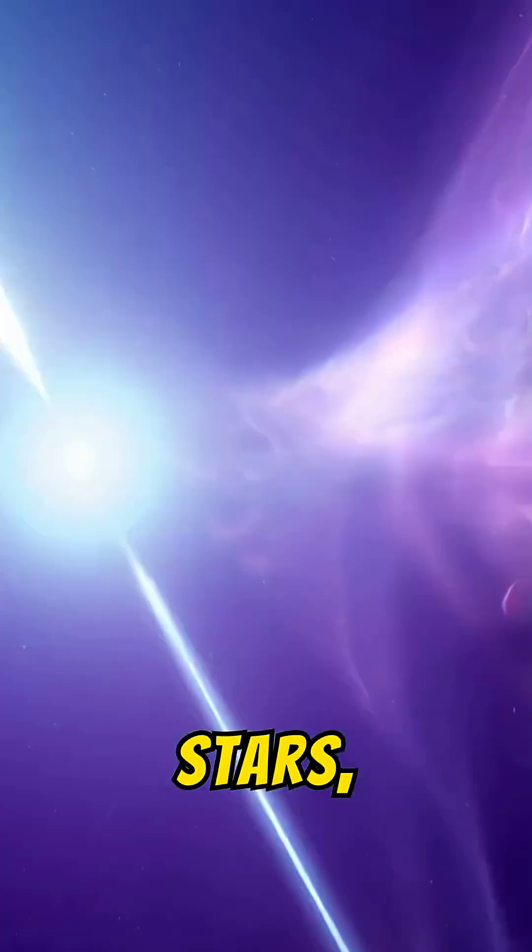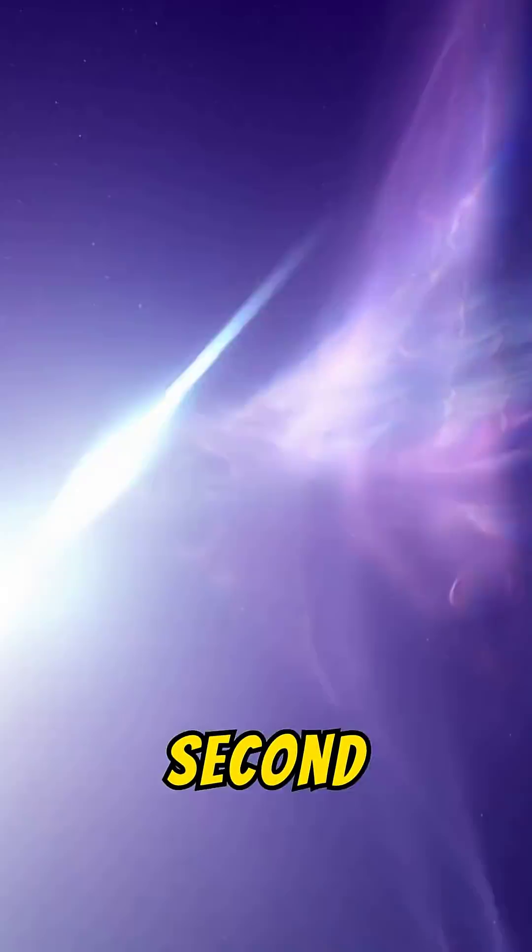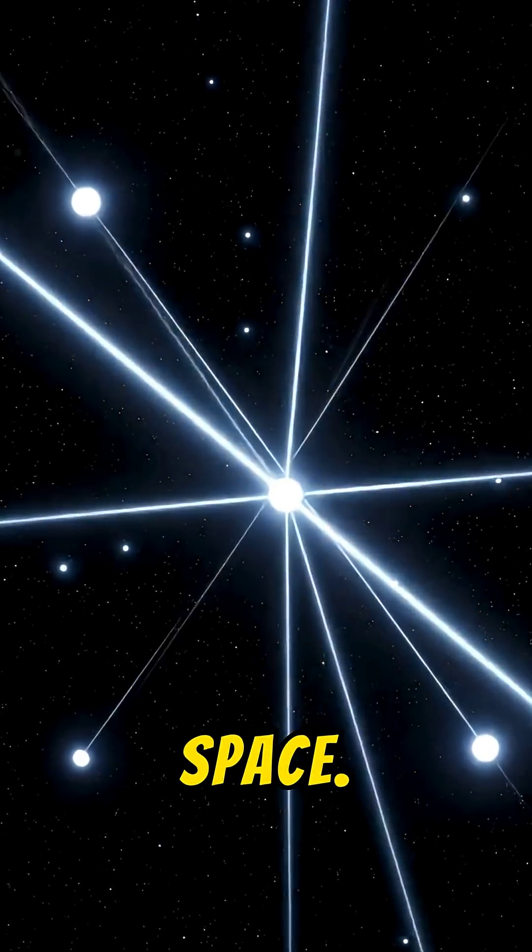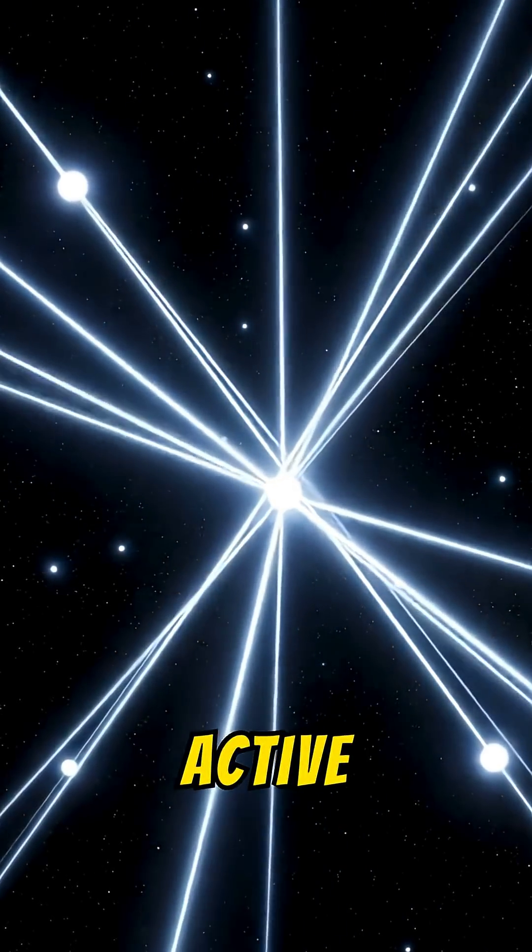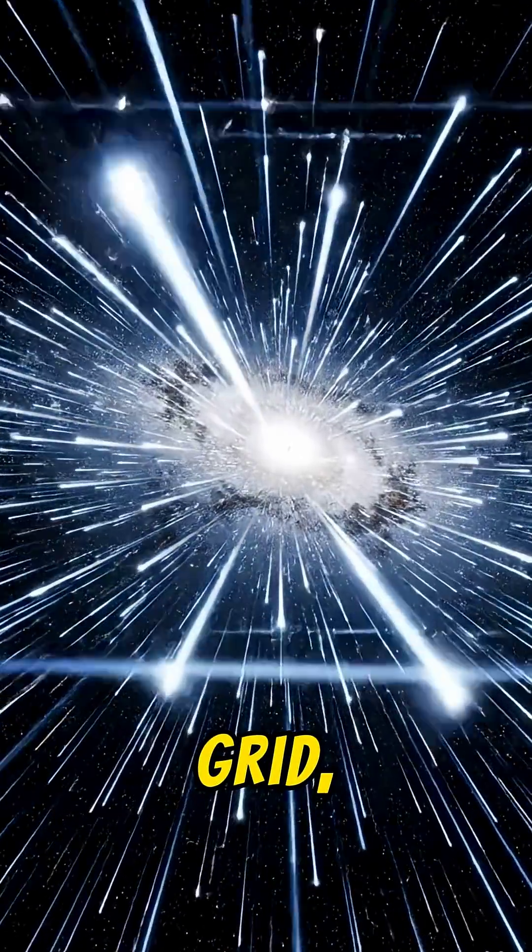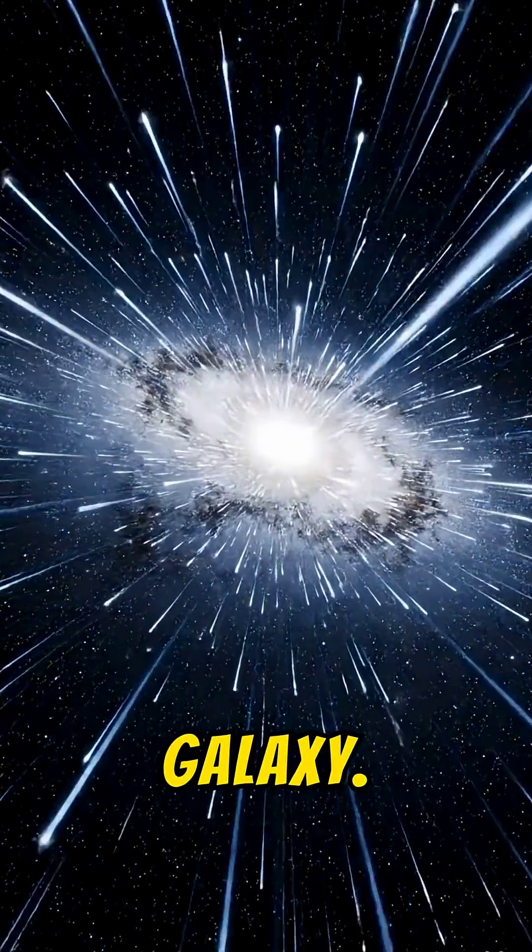Pulsars are neutron stars, spinning hundreds of times per second and firing focused beams of radiation into space. With billions of them active at once, the Milky Way would turn into a massive lighthouse grid, sweeping radiation across every region of the galaxy.